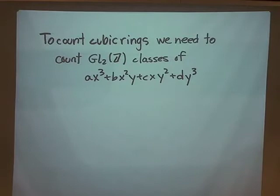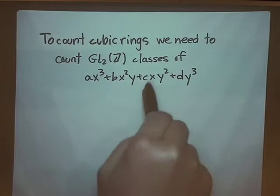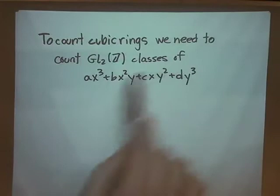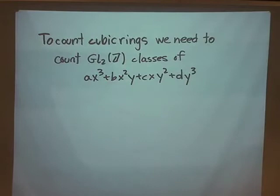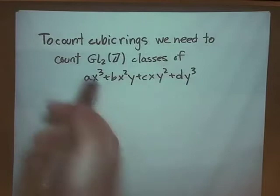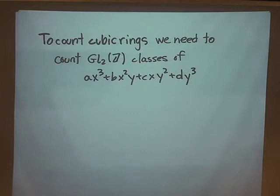Today, in this last lecture, I have two goals. First, I want to talk about how it happened that to count cubic rings all we had to do was count GL2Z classes of binary cubic forms. I gave a completely concrete proof by writing down the multiplication table, but it seems a little magical, so I'll try to explain why this magic happened. The second goal is to say something about the tools that go into counting those classes.